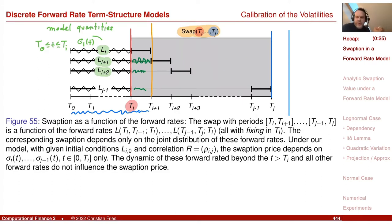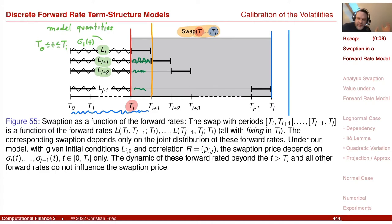That was the first part on calibration. Apart from that, you can view calibration as just an optimization problem: choose the parameters such that the calibration error — the distance of the model quantities from the observed quantities — becomes minimal.